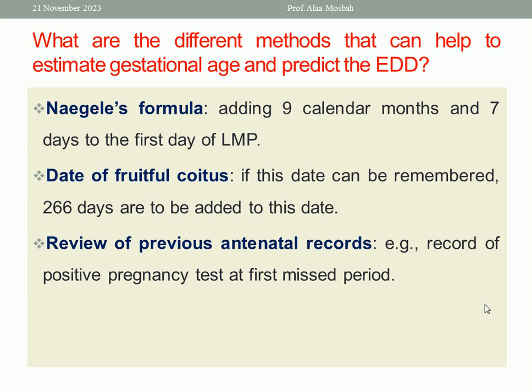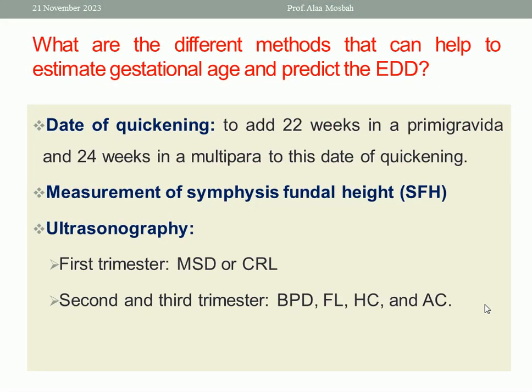Review of previous antenatal records. The follow-up antenatal record will help you in detecting the gestational age and the expected date. Also, for example, if we have a report of a positive pregnancy test at the first missed period, this will be very helpful. Another method is the date of quickening — the first perception of fetal movement — which occurs earlier in multipara than in primigravida. We add 22 weeks in primigravida and 24 weeks in multipara to the date of quickening, if the patient can remember it.